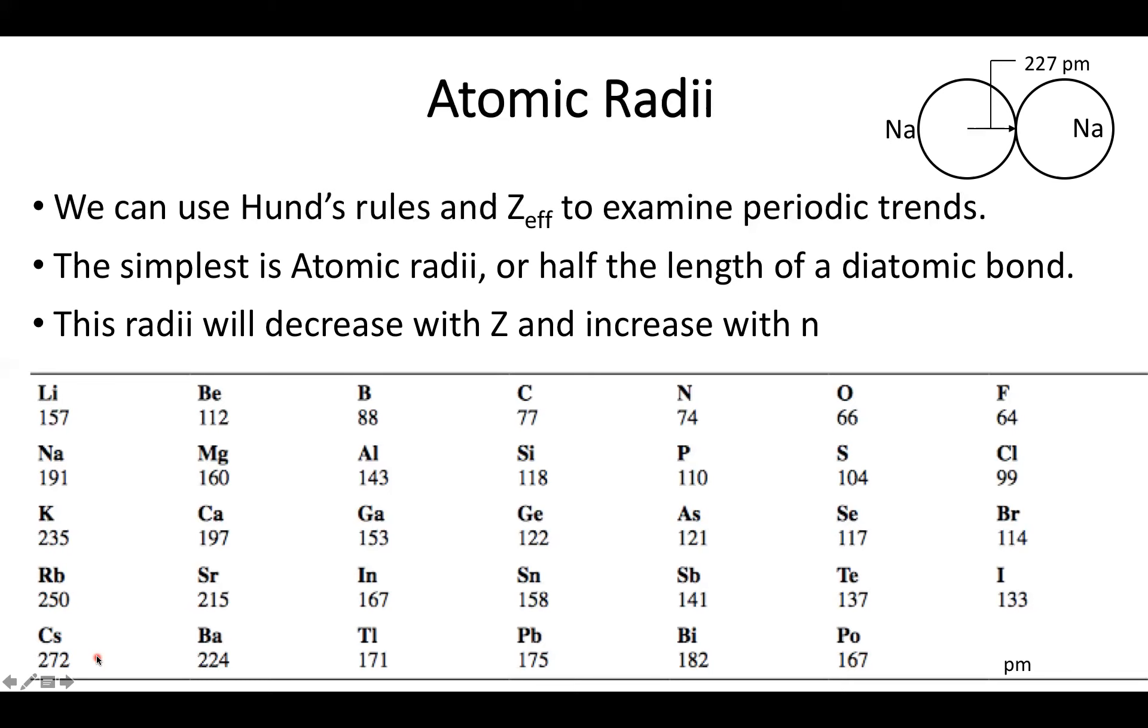It's worth noting that this idea of radii will often play into a lot of our other periodic trends because the further away an electron is away from the atom, the less tightly bound it is going to be to our system.